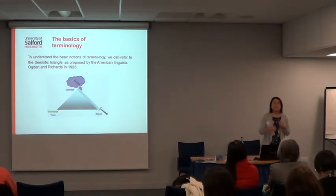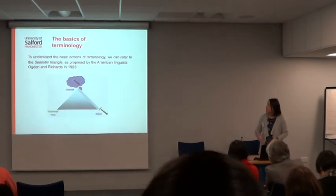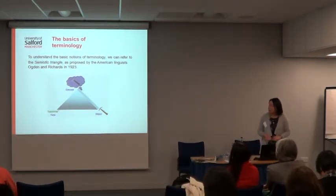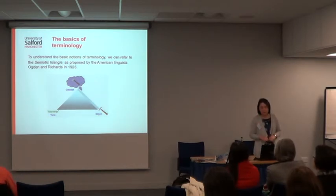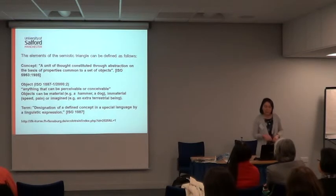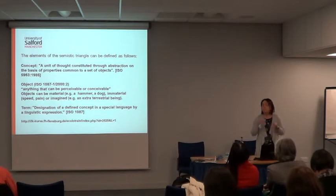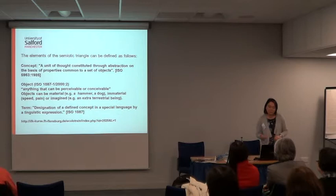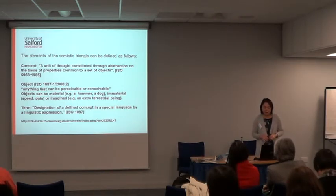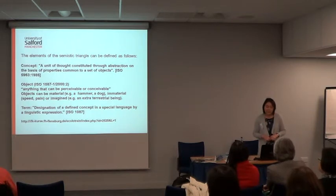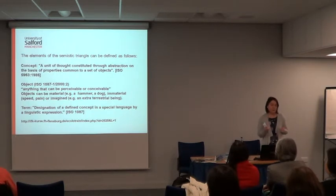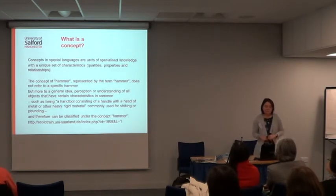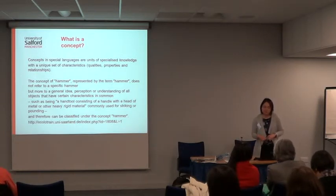We start with discussing basic concepts with students: what is a concept, what is a term, what is an object. We go to the semiotic triangle, which is a very graphic and simple way of looking at the basics of terminology — concepts as a unit of thought, abstractions on the basis of properties common to a set of objects; the object itself, which can be material, immaterial, or imagined; and the third element, which is the designation for that concept.